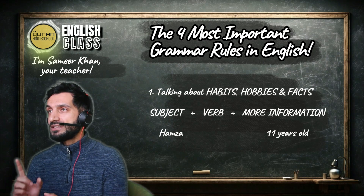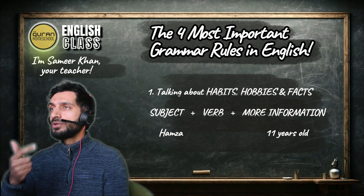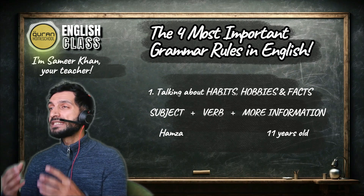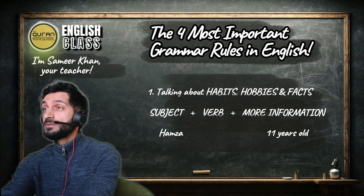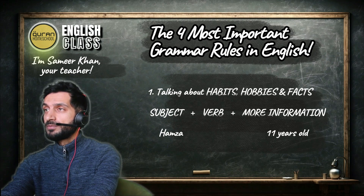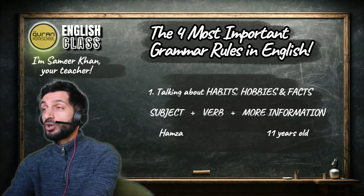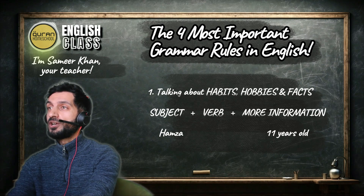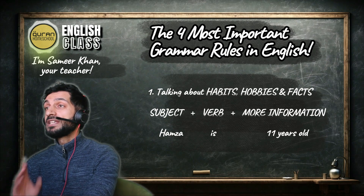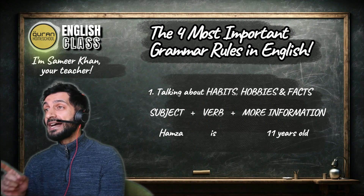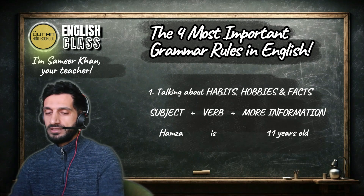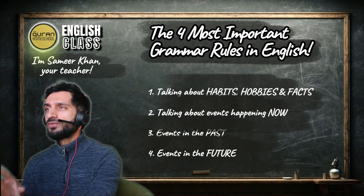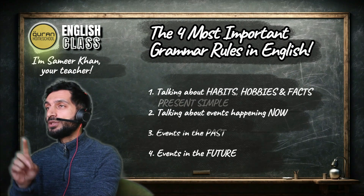In the present, the verb to be is is, am, or are, depending on the subject. We are speaking about Hamza, so we start with Hamza. Then: 11 years old — this is more information. What's the verb? Hamza is 11 years old. Now this is a full sentence.